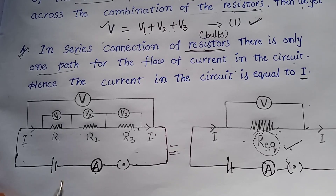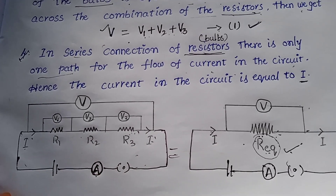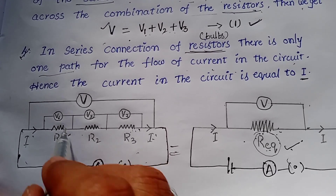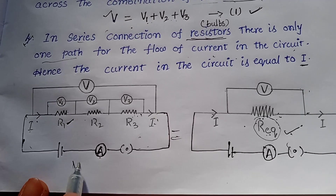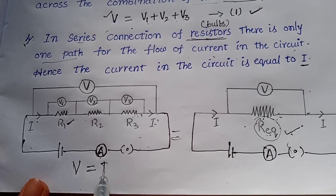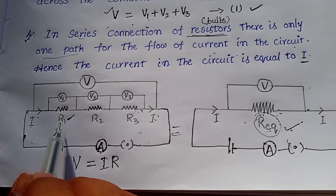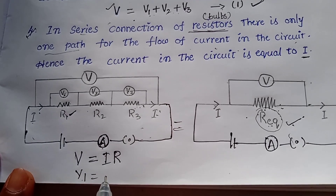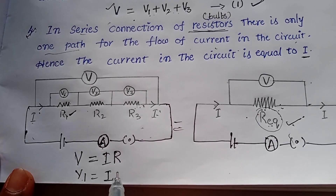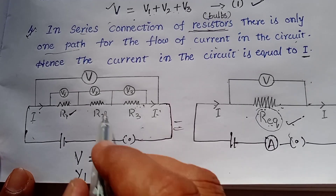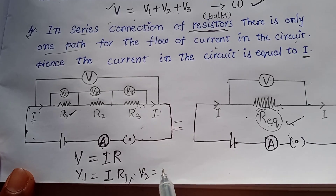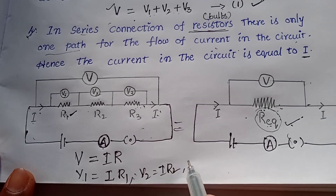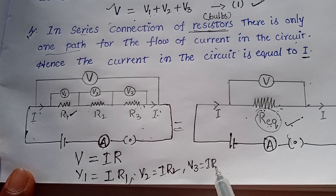According to Ohm's law, the equation is V equals IR. Across the resistor R1, the potential difference V1 equals IR1. Across R2, V2 equals IR2. Across R3, V3 equals IR3.